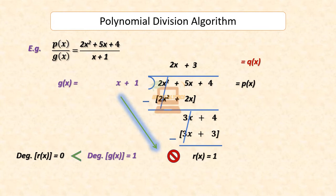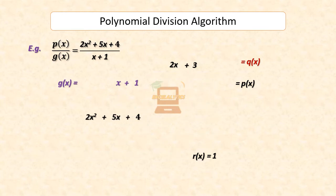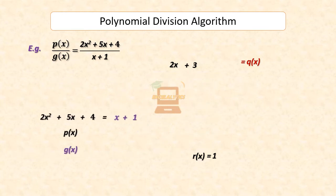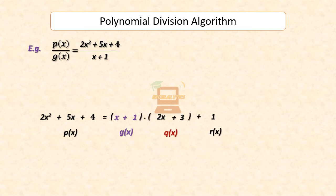So we can write: the dividend 2x squared plus 5x plus 4 is equal to the divisor x plus 1 times the quotient 2x plus 3, plus remainder 1. In our current case, we divided a quadratic polynomial with a linear polynomial. Let us now see another example, where we will divide a higher degree polynomial with a quadratic polynomial.